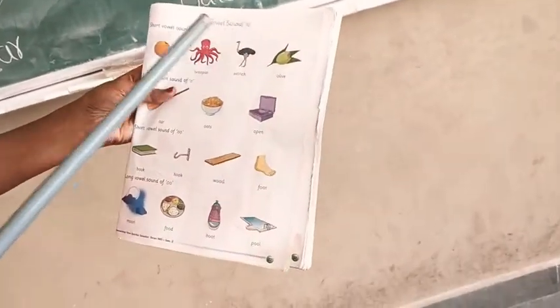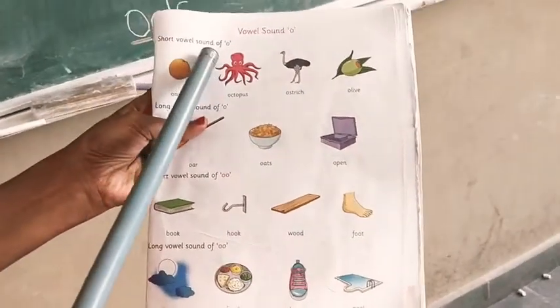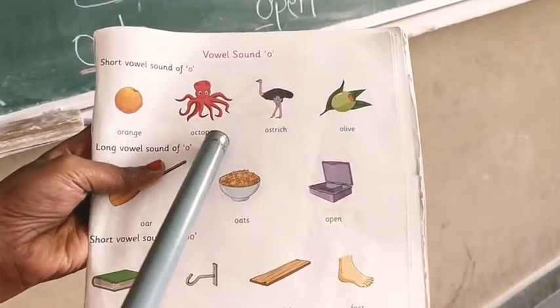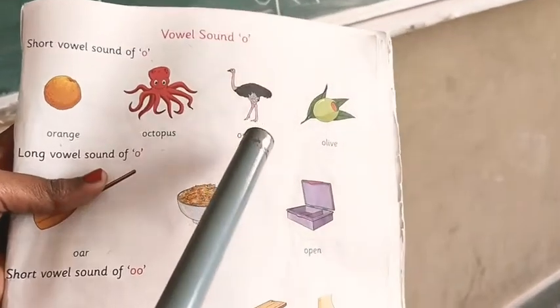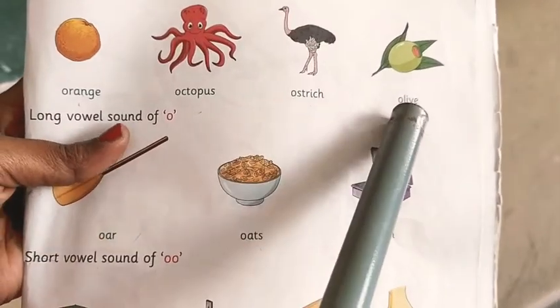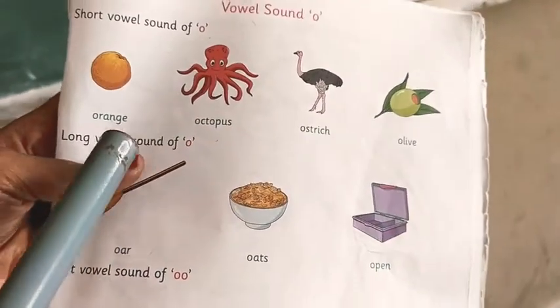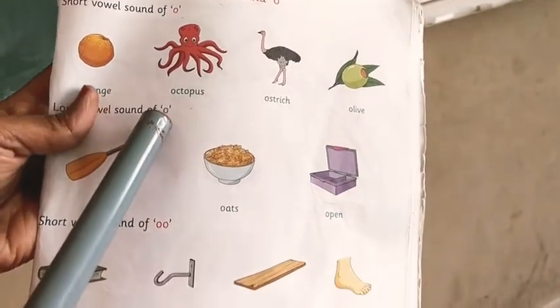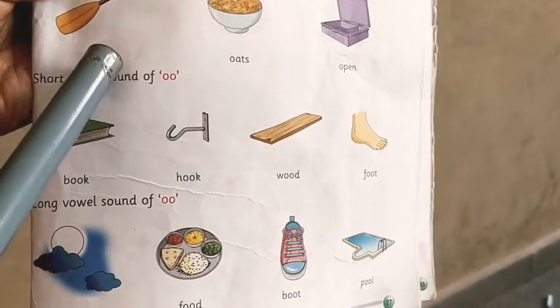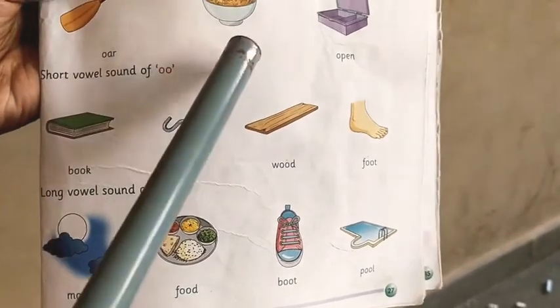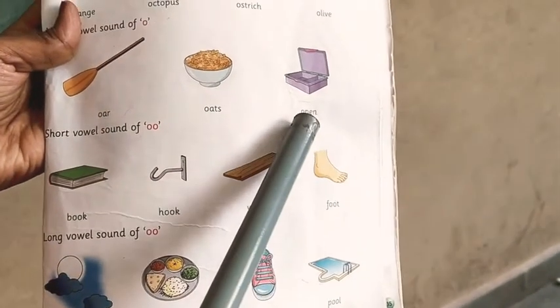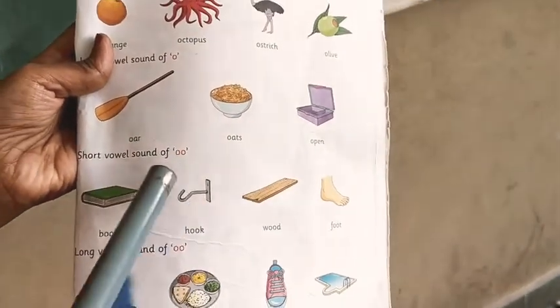Vowel sound of O. Short vowel sound of O: orange, octopus, ostrich, olive. Long vowel sound of O: old, oats, open.